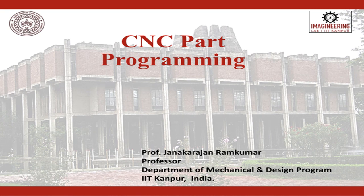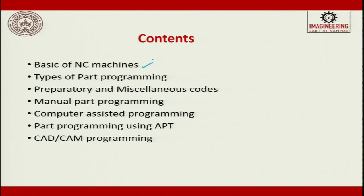Till now we saw what is CNC, what are the components of a CNC, what are the two types of CNC — that means machining center and turning center — what are their variations, and we saw about the cutting tools also. In this we will be more focused towards part programming. Here we will see basics of NC machines, then types of part programming, preparatory codes and miscellaneous codes, manual part programming, computer assisted part programming, part programming using APT, and finally CAD CAM programming.